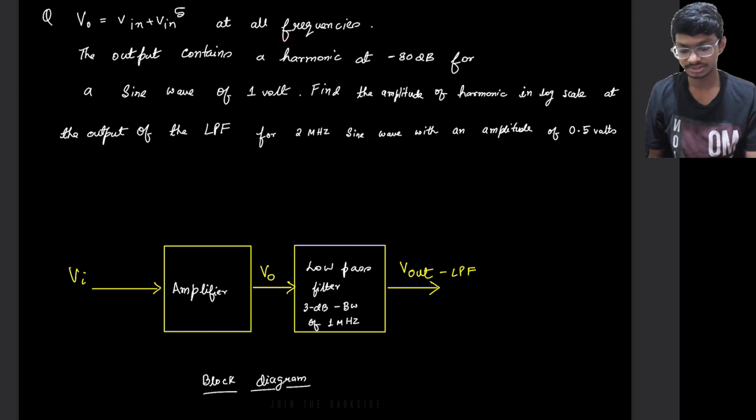which is valid for all frequencies. Now the question states that it has one output that contains a harmonic of minus 80 dB for a sine wave of 1 volt. So it is asking us to find the amplitude of a harmonic in log scale at the output of the low pass filter for a sine wave of an amplitude of 0.5 volts.